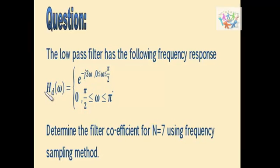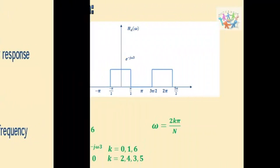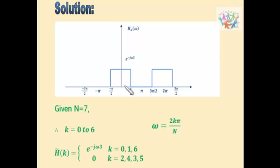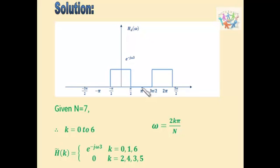Now we need to draw the graph. In the question, for 0 to π/2 we have the value as e^(−j3ω). Since it is symmetric we can extend this half to the other side, so it will be 1 for 0 to −π/2 and 0 for π/2 to π. Since it is symmetric we can extend the line from π to 3π/2, and since this is a periodic system the same process will continue.